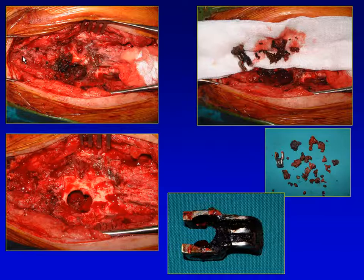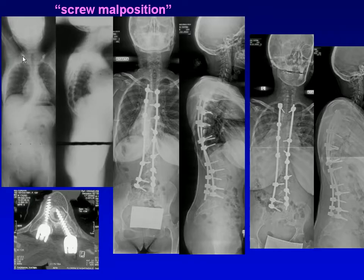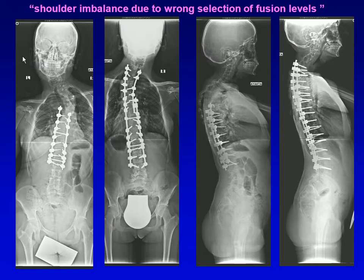As you can see, metallosis around the first-generation three-dimensional implant. The cup/connector position is very important. The patient had partial neurologic deficit; after removal and exchange of the connector, neurological deficit recovered. Another case involved wrong selection of fusion level, resulting in shoulder imbalance and trunk shift of the body.